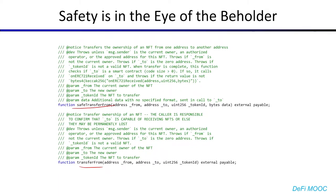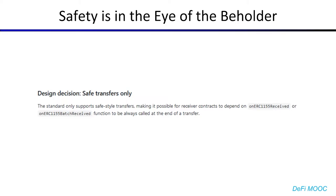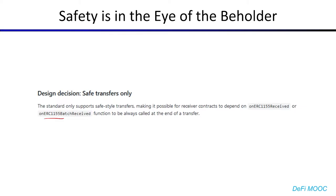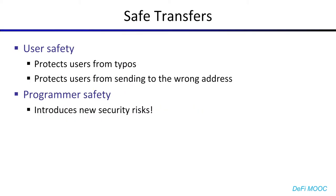As mentioned earlier with the ERC20 spec, a common mistake was to transfer tokens to the zero address or the token address itself. In other words, this wasn't exactly a solution in search of a problem. As a result, it wasn't surprising that future specs, such as the ERC1155 specification, also included such safe transfer designs. So what do these safe transfers do? In terms of user safety, they do a lot — they protect users from typos and from sending tokens to the wrong address. However, in terms of programmer safety, it turns out these safe transfers are anything but, and in fact introduce new security risks.